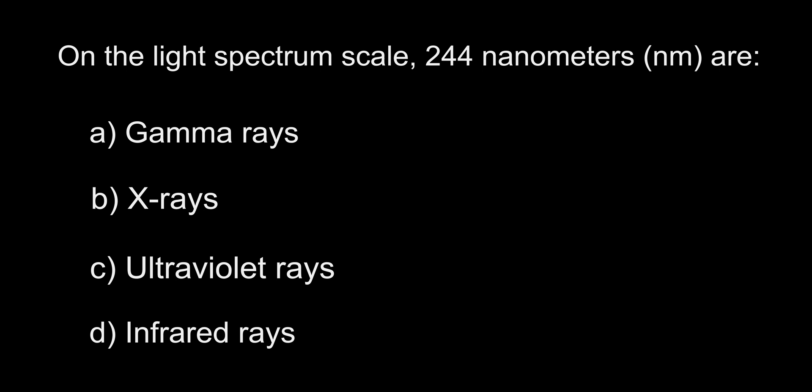On the light spectrum scale, 244 nanometers are: A. Gamma rays, B. X-rays, C. Ultraviolet rays, D. Infrared rays.